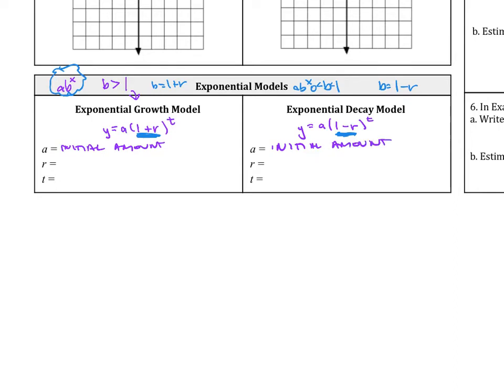t, since we're looking at word problems, we're looking at time. r, so 1 plus r, so r is going to be the percent for growth, it's percent increase. And important to remember that it's as a decimal. And then for decay model, it's percent decrease as a decimal.